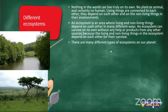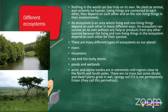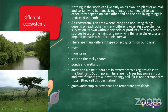Excellent — Triasha has shared a desert in Namibia with us. A dial is saying the Nile River. On our planet we've got rivers, mountains, sea and rocky shores, ponds and wetlands. The Arctic and Alpine tundra are extremely cold regions close to the north and south poles. There are no trees in such ecosystems, but some shrubs and dwarf plants grow in wet, spongy soil. If the soil is not permanently frozen, it's called the permafrost. Very, very cold — sometimes even frozen.